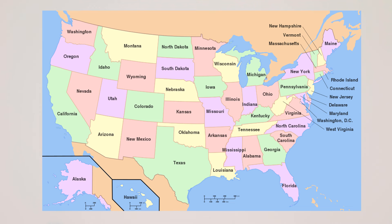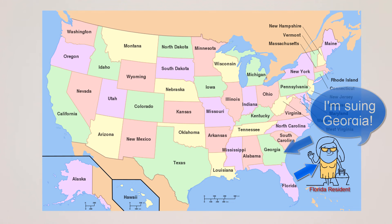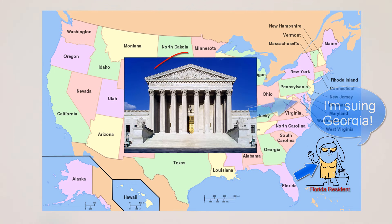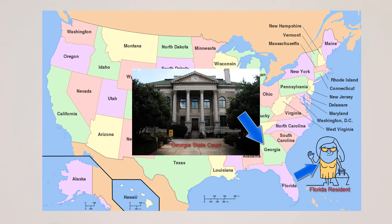The 11th Amendment deals with lawsuits against states. When a citizen of one state or a foreign country wishes to sue a state, it may not do so in federal court. It must do so in the state's court. This protects the powers of the states.